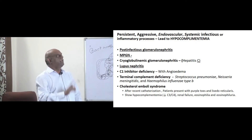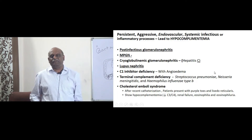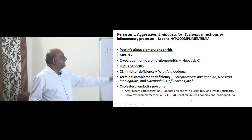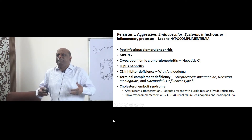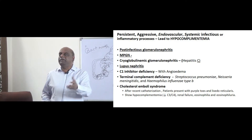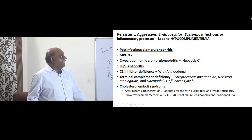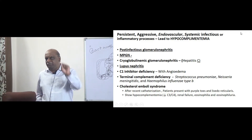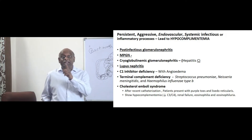Post-infectious glomerulonephritis — any infection consumes immune complexes and leads to hypocomplementemia. Membranoproliferative glomerulonephritis (MPGN): anything proliferative, infectious, or inflammatory leads to hypocomplementemia. Cryoglobulinemic glomerulonephritis — the important infection to remember here is hepatitis C, as many of these patients will have hepatitis C serological positivity.